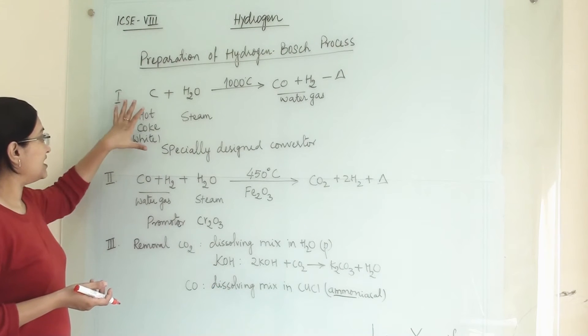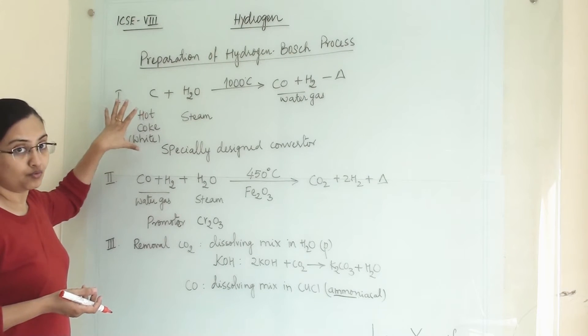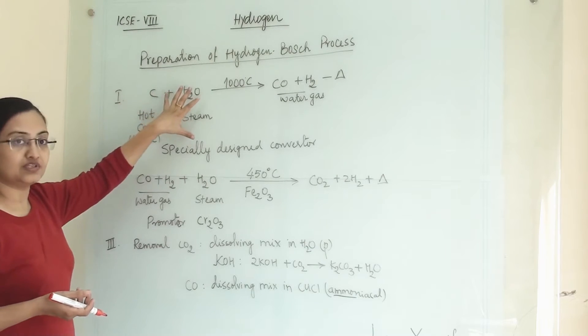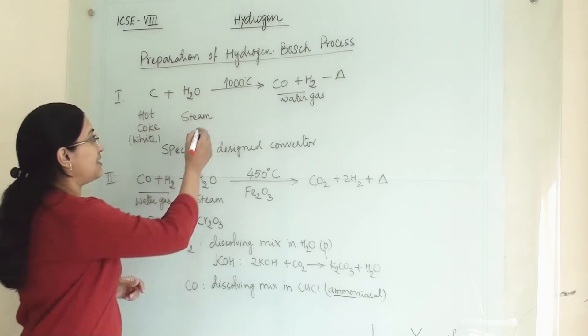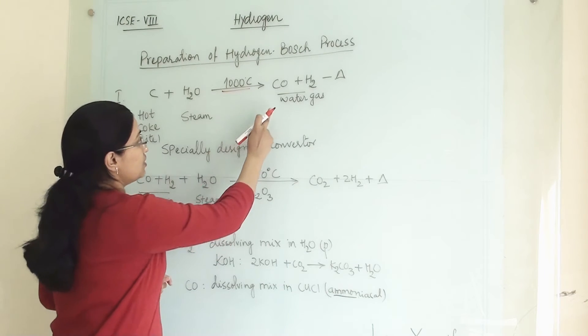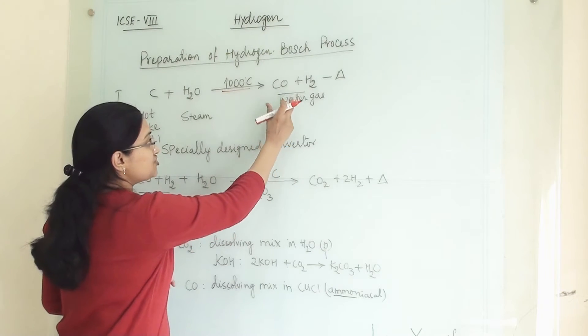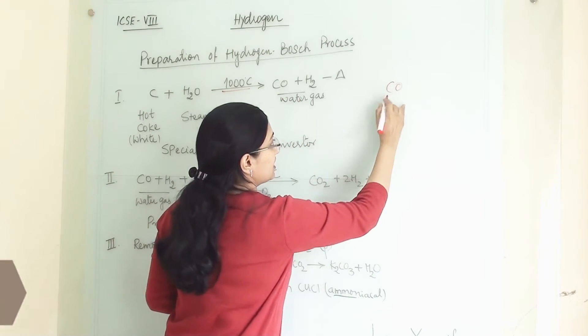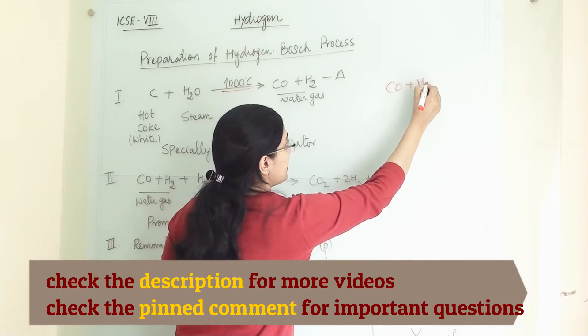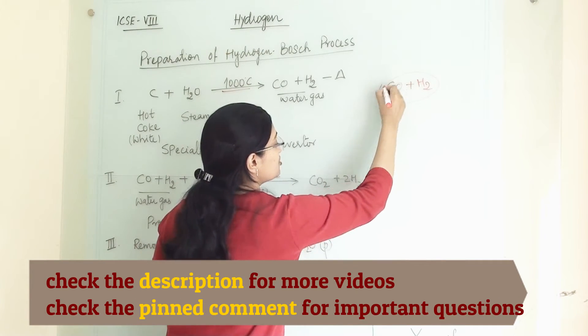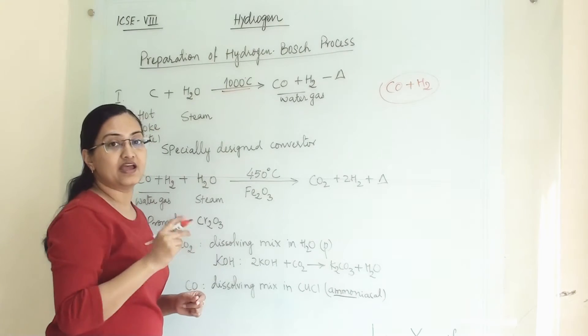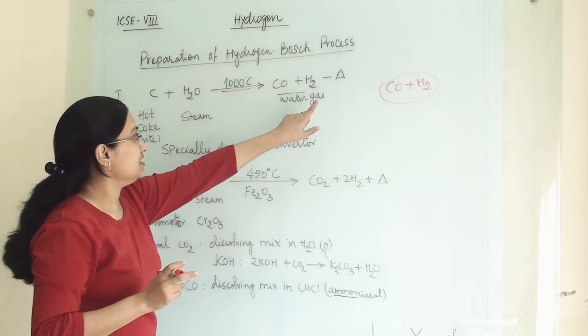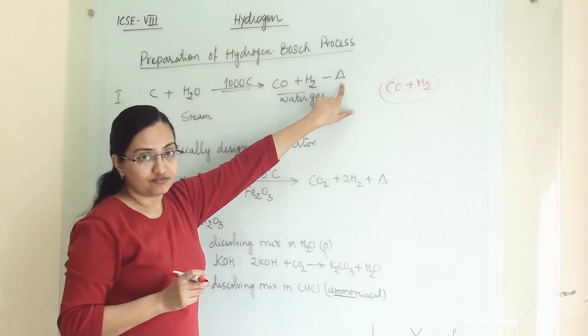In the first step we are taking white hot coke that is reacting with steam. This reaction is happening at 1000 degree Celsius. We will get a mixture of carbon monoxide and hydrogen gas. This mixture is collectively known as water gas and we need a lot of energy.